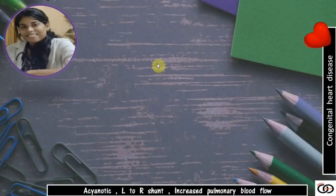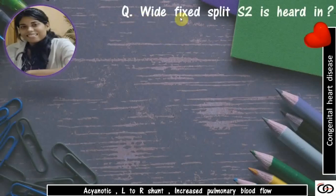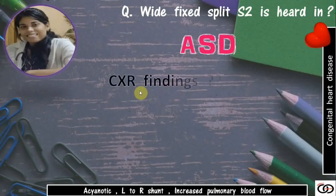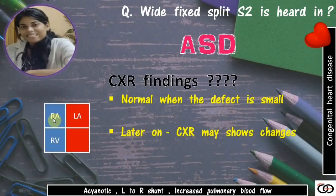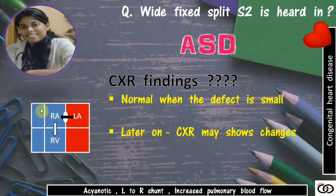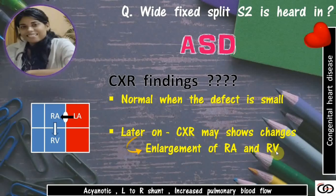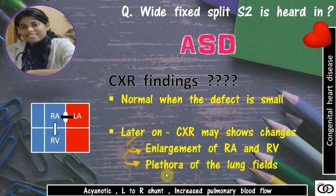Now coming to the individual diseases. Fixed split S2 is heard in atrial septal defect, ASD. The chest X-ray is usually normal when the defect is small, but later on it may show changes. In ASD there is a septal defect through which blood goes from the left atrium to the right atrium and then to the right ventricle. So the right atrium and right ventricle receive extra blood and undergo enlargement, which we can appreciate on chest X-ray films. The extra blood on the right side also goes to the lungs, so we appreciate plethora of the lung fields — meaning vessels are visible in the lateral one-third of lungs, indicating high vascularity.